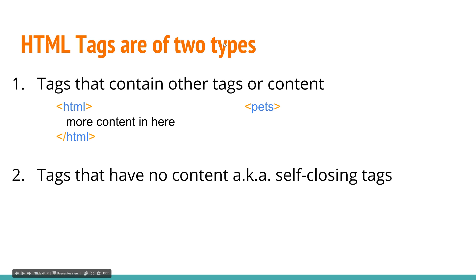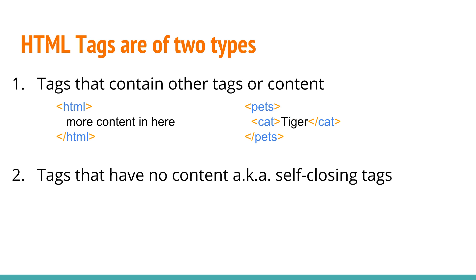Let's write another one. We'll start with the tag 'pets': lesser sign, pets, greater sign. We close it with lesser sign, slash, pets, greater sign. Inside it, let's add a cat tag with content 'Tiger', and another tag 'dog' with content 'Spike'. So this is all valid HTML.